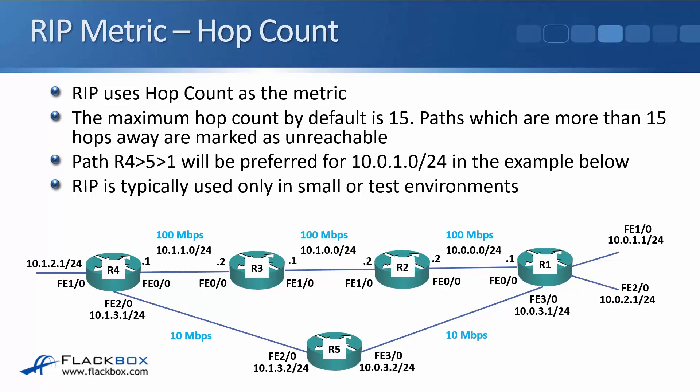From R4, all the links in the top path are 100 megabits per second — fast ethernet. The links going down via R5 are old 10 megabits per second links. But with RIP, because it always uses hop count, it is the bottom path that is going to be preferred, because it's only two hops to go from R4 to R5 to R1 rather than three hops going via R3, R2, and R1. Because of the scalability limitation and because it doesn't take bandwidth into account, RIP is not normally used in production networks, only in really small networks or test environments.